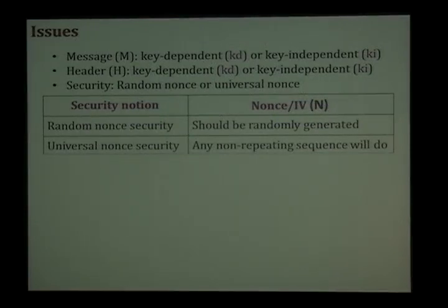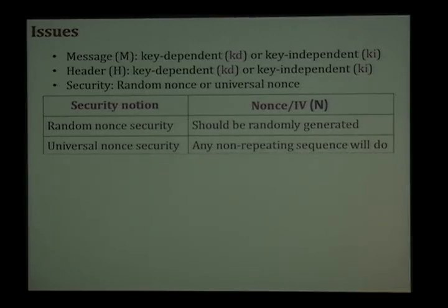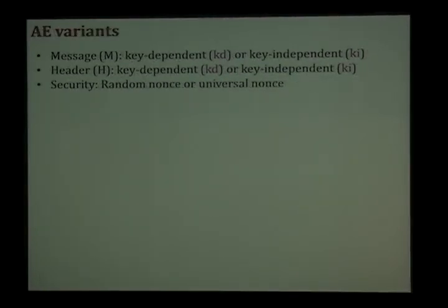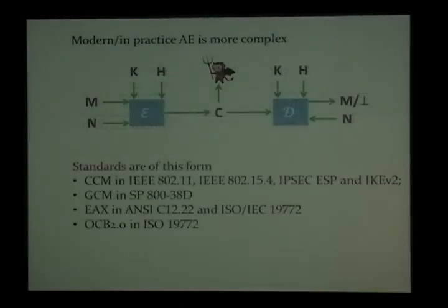Now, if we bring in KDM, what are the issues we have to handle? As always, the message can depend on the key — this is what KDM is about. But now we also have a header, and the header can also depend on the key. Not just that, the nonce that is given as input to the encryption scheme does not have to be random. If the nonce is random we are in the random nonce security setting. But there is another setting called universal nonce security, where the encryption scheme is only guaranteed a nonce that is unique and non-repeating — it could be a counter, for example. Universal nonce security is more attractive in practice: it's easier to maintain a counter than to maintain a good randomness source. Consequently, the standards we saw actually talk about authenticated encryption in the universal nonce setting.